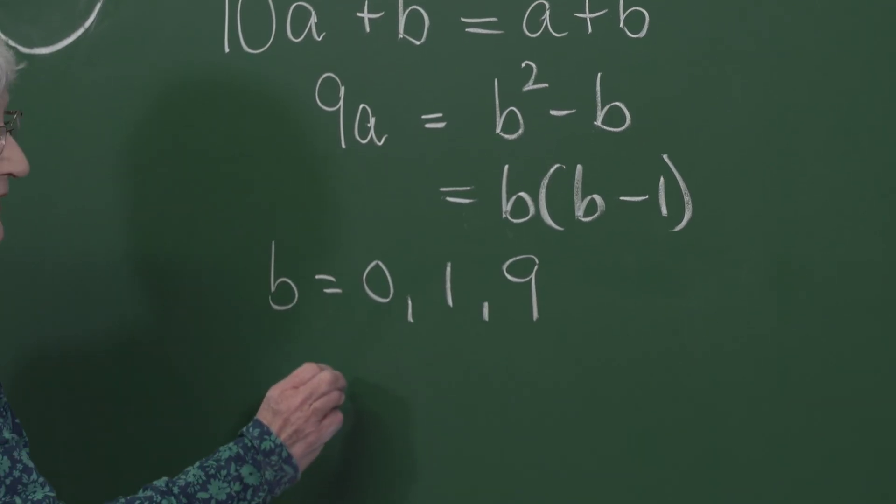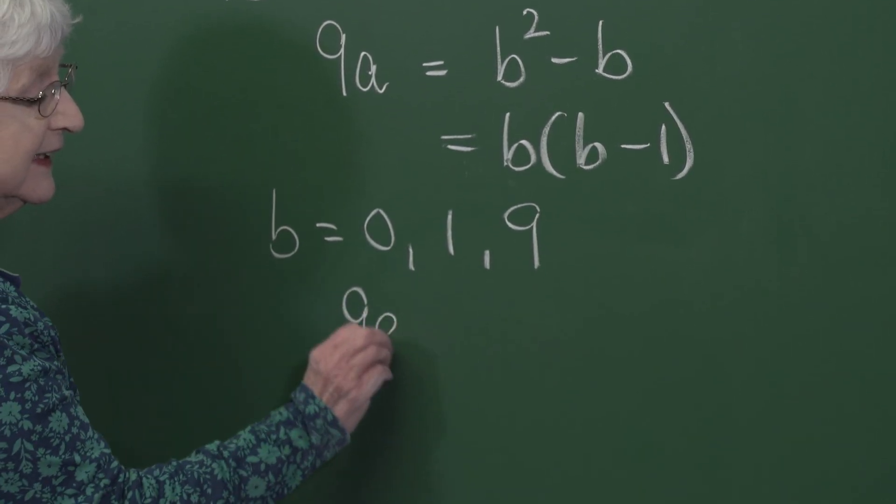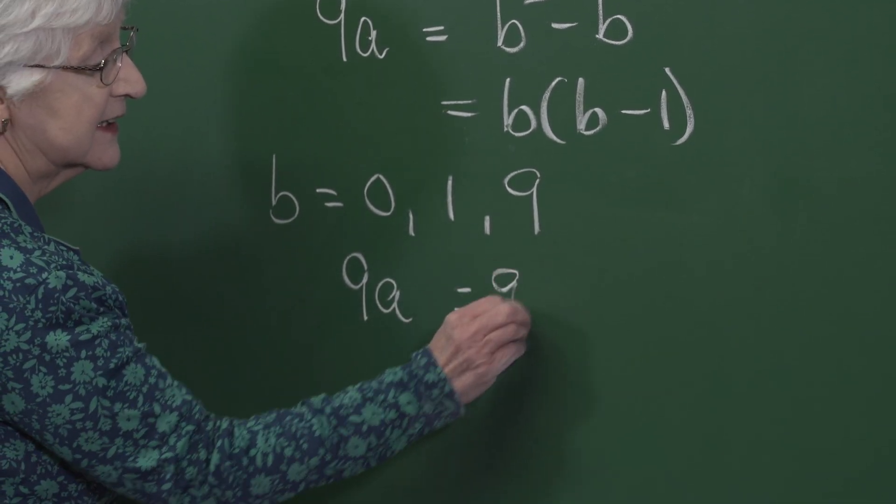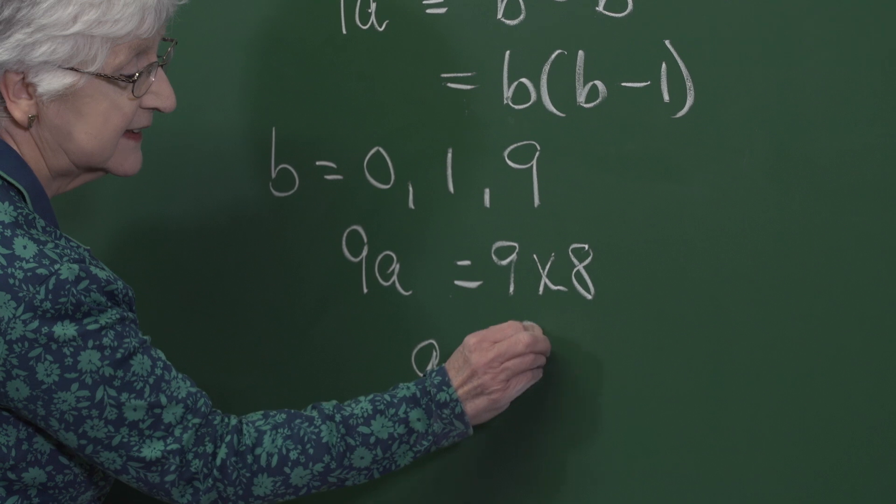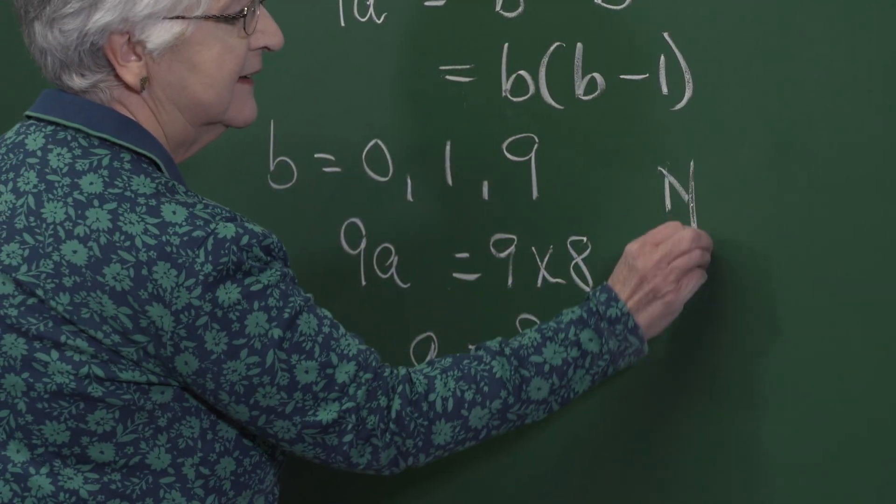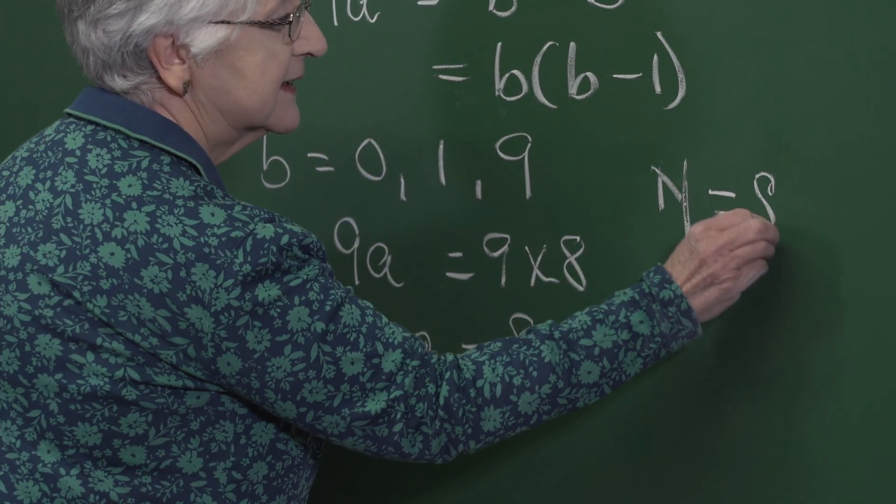So that means B equals 9, and 9A is 9 times 8, which gives me A equals 8, and our number N is 89.